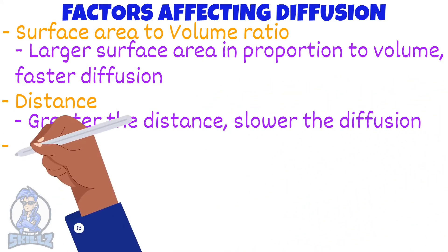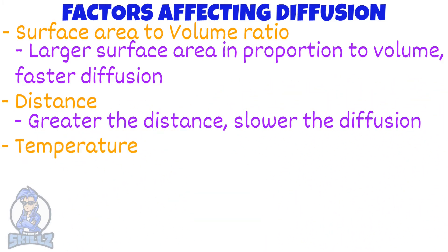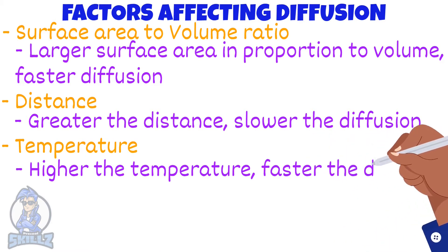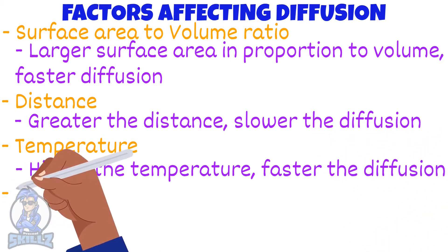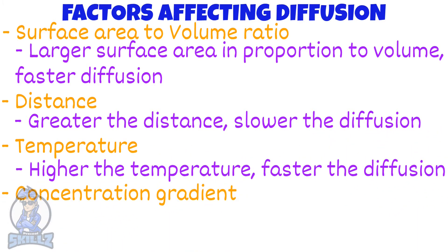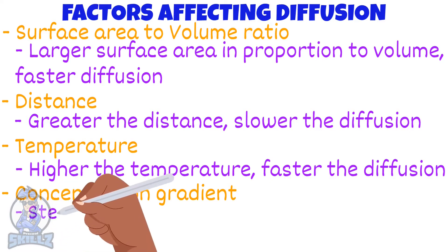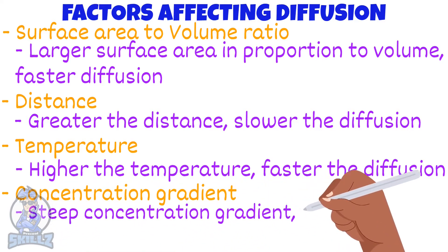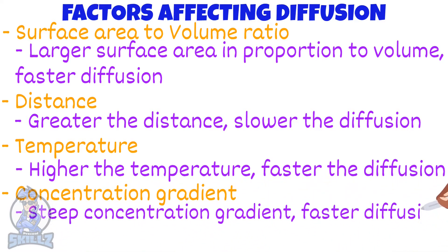Next is temperature — diffusion is faster at higher temperatures. And concentration gradient: if there is a big difference in concentration, or a steep concentration gradient, there will be faster diffusion.